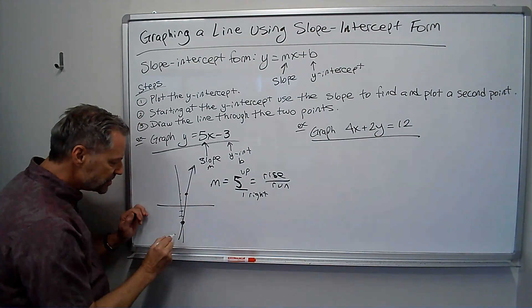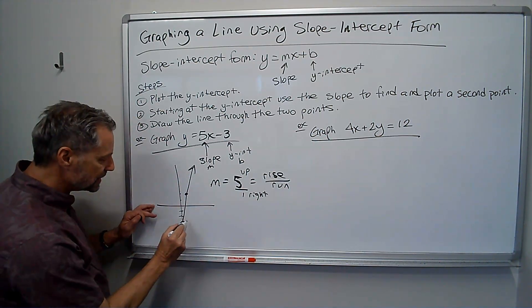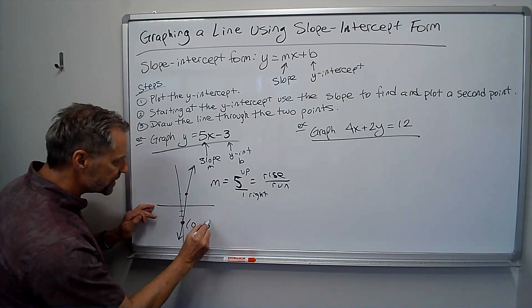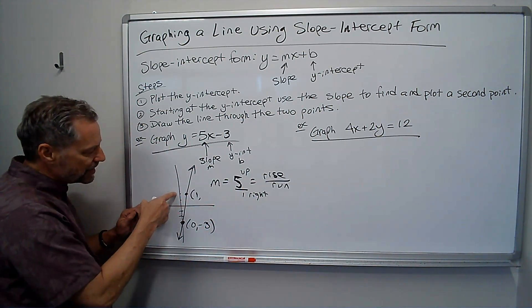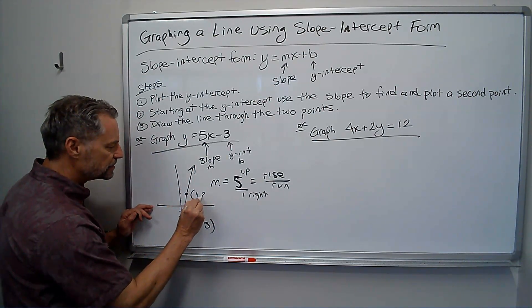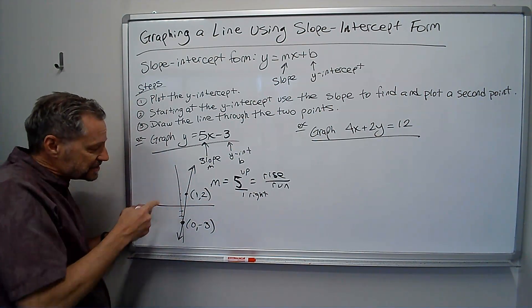The line through my two points looks like this. Now we'll go ahead and label this. This was 0, negative 3. Let's say I went right 1, so I'm at 1. I went up 5, so I went up 2 past here. So it's 1, 2. That's my line. Done.